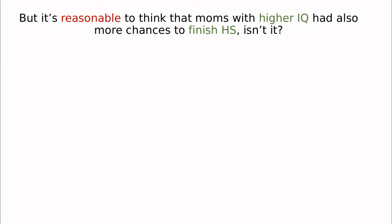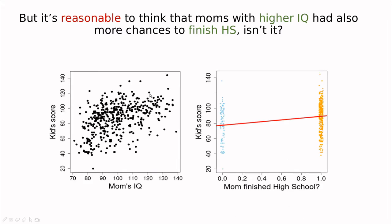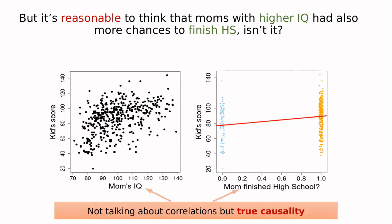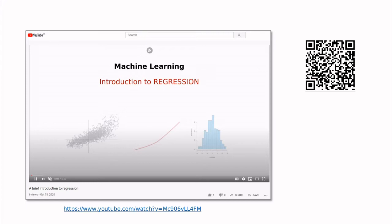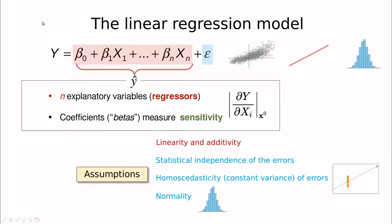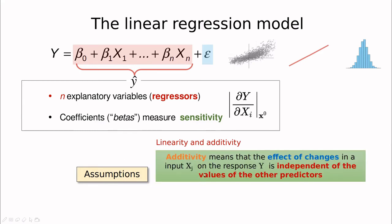But to me, it's quite reasonable to think that moms with higher IQ has also more chances to finish high school. So I would say that it's not a matter of taking those two separately or even to combine them additively. So there is some sort of causality there. And if you go back to the first video in the series, the introduction to regression, we discussed some assumptions behind linear regression. And one of the most strong ones was additivity. The idea that the effect of one variable is independent of the effect of the other variables.